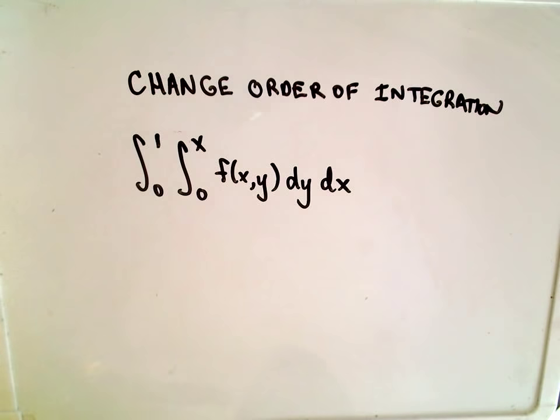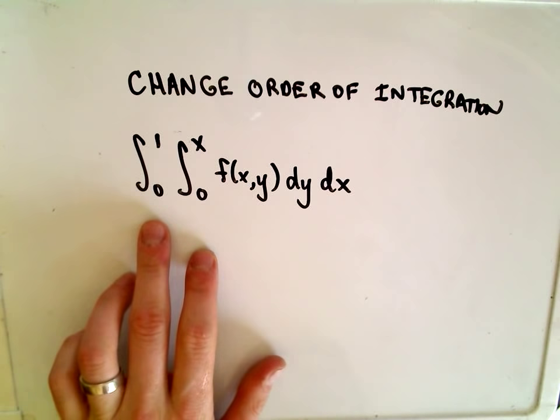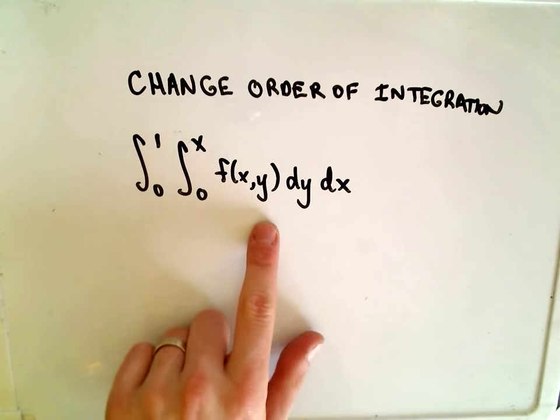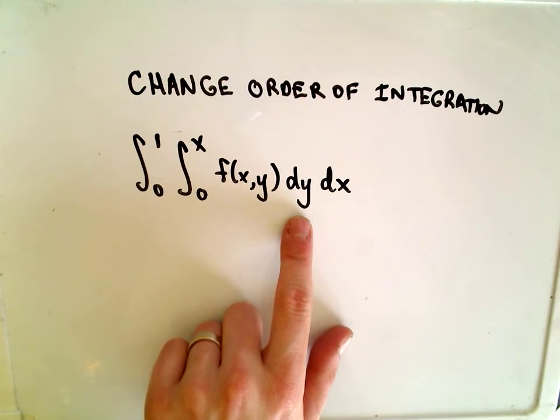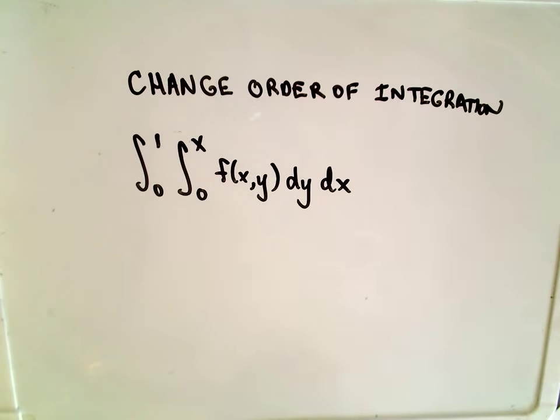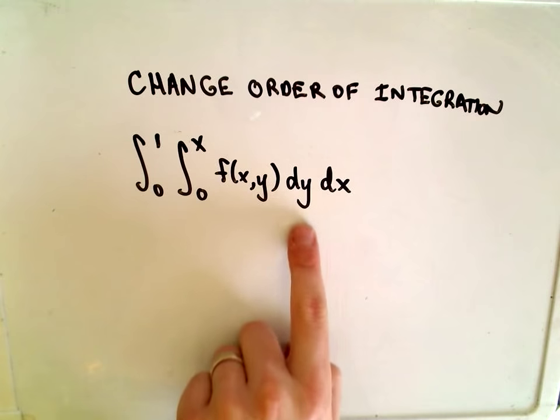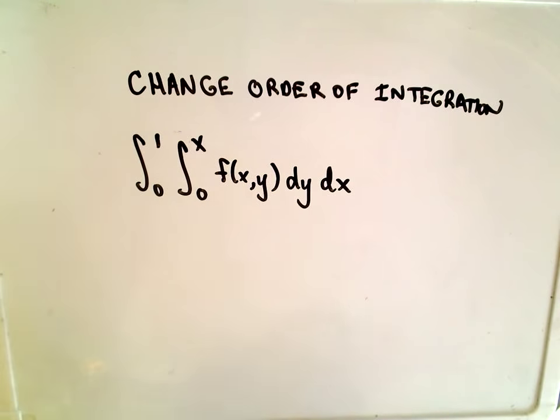So the basic idea is this. Suppose we're going to integrate from 0 to 1 and then 0 to x of a function f(x,y). We're going to integrate with respect to y first and then x. So what we want to do is somehow switch it so that we have dx first and then dy next.